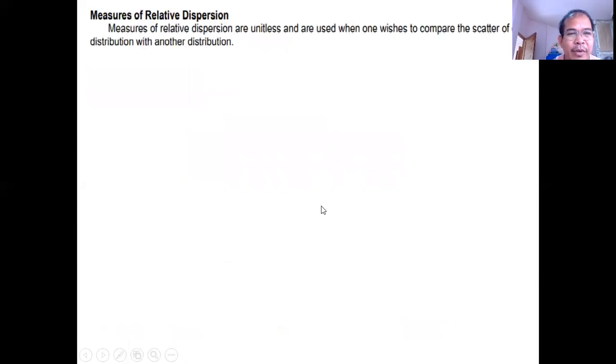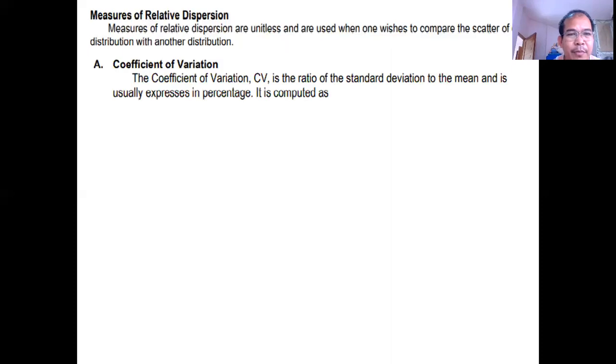Let's have measures of relative dispersion. Ang measures of relative dispersion are unitless, meaning wala siyang unit of measurement, and are used when one wishes to compare the scatter of one distribution with another distribution. Two or more groups pwede gamitin ang relative dispersion. We have coefficient of variation, or CV. It's the ratio of the standard deviation to the mean, and usually expresses in percentage.